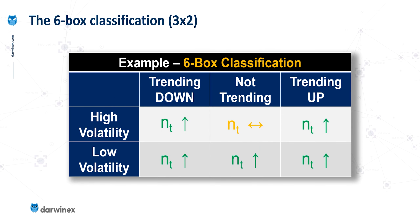As an example, you could use a three-by-two matrix instead. I probably wouldn't recommend removing the trending categories — I would keep that at three, having one for an uptrend, one for a downtrend, and one for a non-trending condition. However, in terms of volatility, you might want to consider reducing that to just two: high volatility and low volatility categories. Because now the same number of trades needs to be spread across six categories instead of nine, there will clearly be more trades in each, giving you a more statistically significant idea of how well your system performs in each of those regimes.